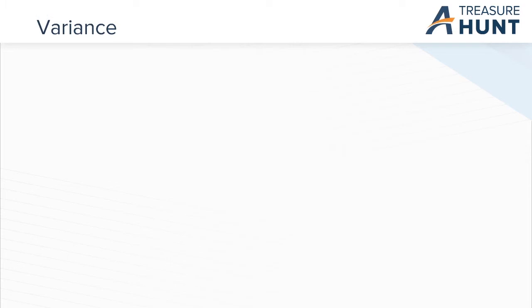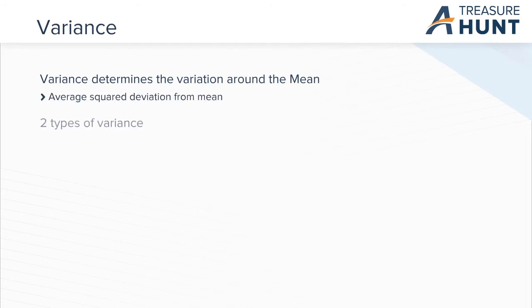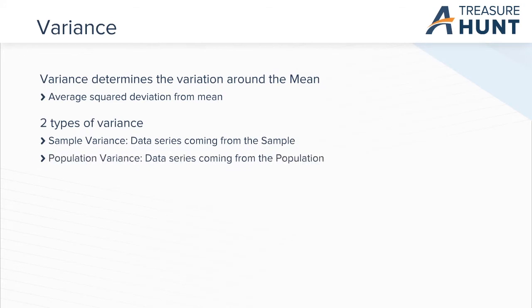Let us now look at the important concept called variance. It is an important measure of variation used to determine variation of data points around the mean. For any data, average deviation from mean is zero, hence variance is defined as average squared deviation from mean. Depending on data series, either coming from the sample or population, we can have sample and population variance.